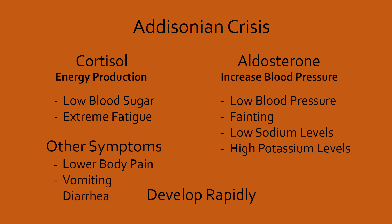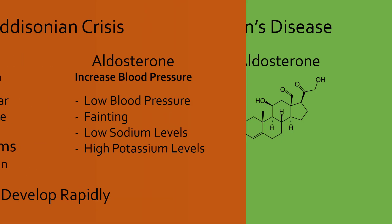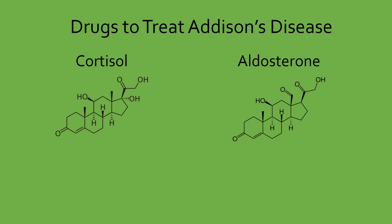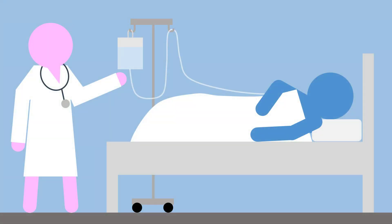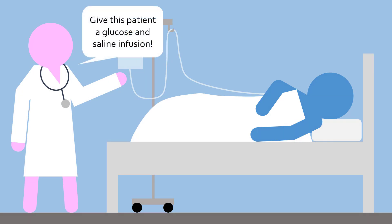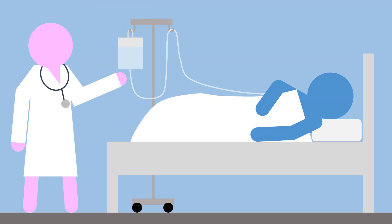Most Addisonian crises are triggered by physical trauma such as injury, infection, or surgery. A person undergoing an Addisonian crisis needs immediate treatment. Since Addison's disease is due to less cortisol and aldosterone, replenishing those corticosteroids will reverse the symptoms. This can be done by injecting cortisol — called hydrocortisone when used as a drug — as well as taking fludrocortisone, which has a similar structure and effects as aldosterone. Additionally, a saline and glucose solution needs to be injected to treat low blood volume and low blood glucose. If this treatment is administered quickly enough, most people will recover.